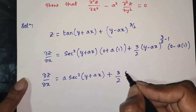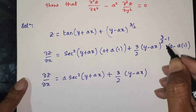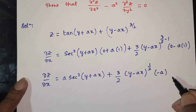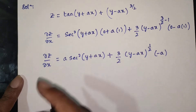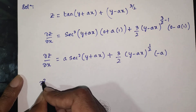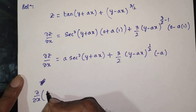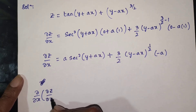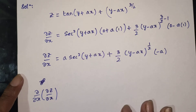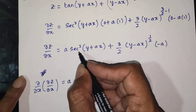∂²z/∂x² is found by differentiating ∂z/∂x with respect to x again. The exponent 3/2 minus 1 gives 1/2, and (3/2 - 1) = 1/2. Now differentiating the secant squared term, we apply the chain rule: d/dx of sec²(y + ax).